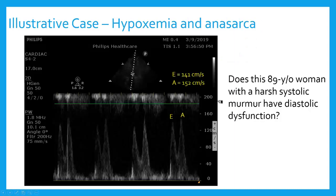Interestingly, down the hall on the same day, I had a patient admitted with hypoxemia and anasarca. On exam she had a harsh systolic murmur and a known history of aortic stenosis. I just wanted to see what her filling pressures were. Does this 89-year-old woman with a harsh systolic murmur have diastolic dysfunction? The answer is almost certainly yes. This machine didn't have tissue Doppler, but I'm getting E velocities of 141 and A velocities of 152 — through the roof. Even if my E-prime velocity is anywhere near normal for an elderly person — 10 or 11 — this E to E-prime is going to be through the roof. These velocities are just way too high to not be diastolic dysfunction.